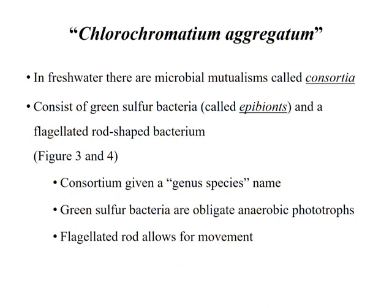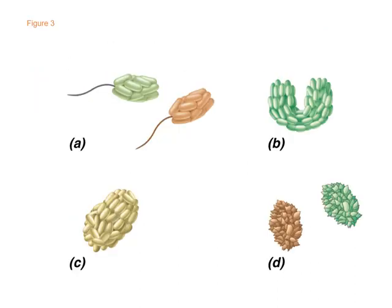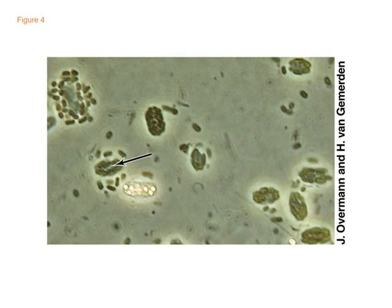Chlorochromatium aggregatum — in freshwater there are microbial mutualisms called consortia. These consist of green sulfur bacteria called epibionts and a flagellated rod-shaped bacterium. The consortium is given a genus-species name. Green sulfur bacteria are obligate anaerobic phototrophs, and the flagellated rod allows for movement. In this slide you can see the rod which allows movement, and the microscopic picture of these associations.